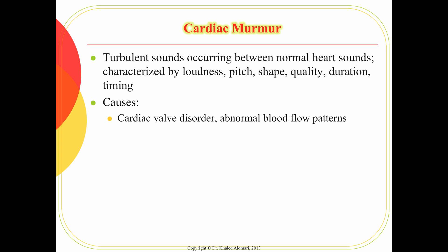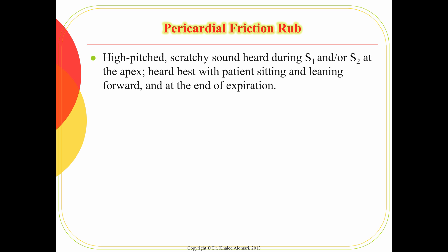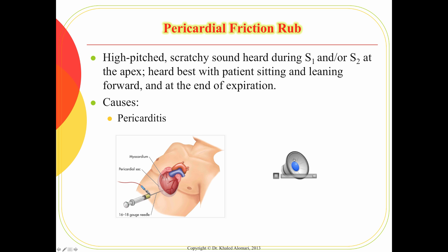Cardiac murmurs will be discussed in detail when we talk about valve disorders. The last finding is pericardial friction rubs, found in patients with pericardial effusion — inflammation or collection of fluid around the pericardial sac. Treatment is the same concept as thoracentesis for pleural effusion: here we perform a pericardiocentesis, which is aspiration of the fluid around the heart.